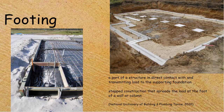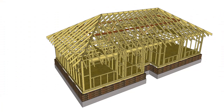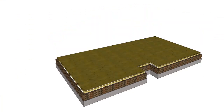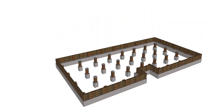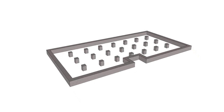It's also referred to as a stepped construction that spreads the load at the foot of a wall or a column. So basically if you get rid of the rest of the building and the ground, what we're left with is the footings for the building. And here you can see a strip footing and some blob footings.